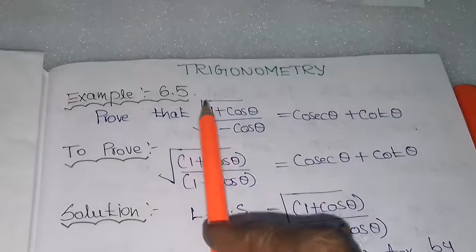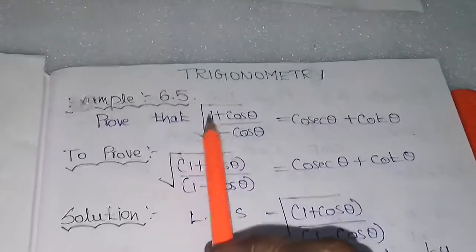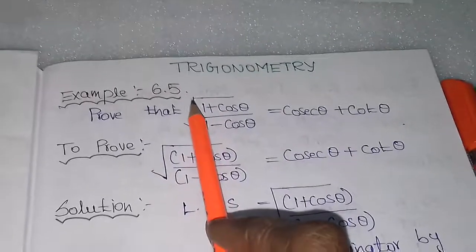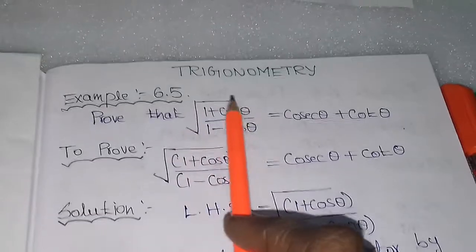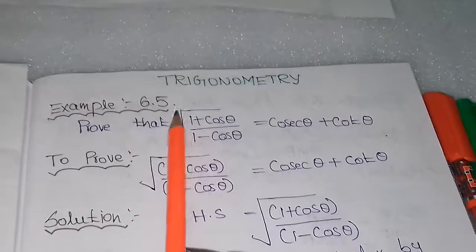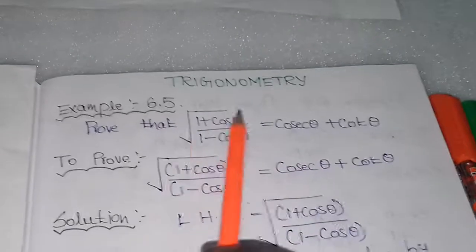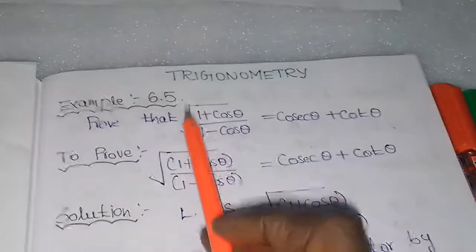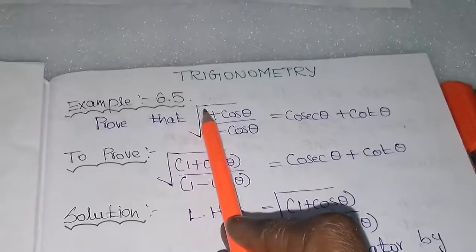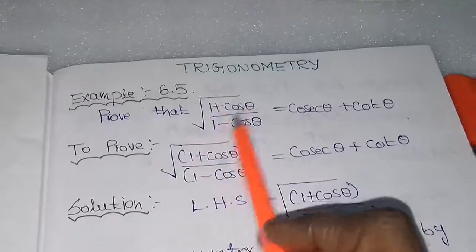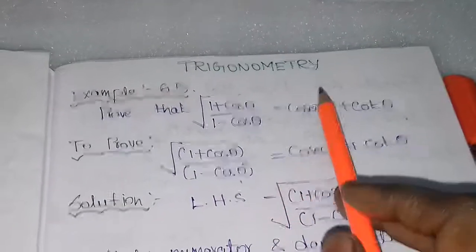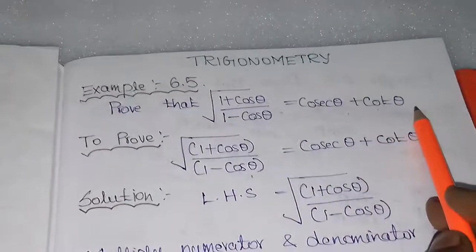To prove: square root of (1 + cosθ) / (1 - cosθ) is equal to cosecant θ plus cot θ. Note that when no index is mentioned under the root symbol, the default is a square root. If index 3 is mentioned, it is a cube root. So here we consider it as a square root.